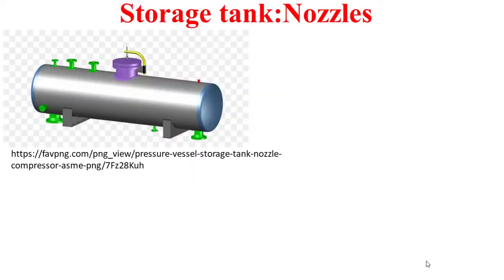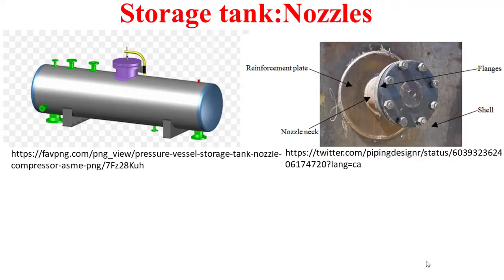As you can see in this figure, the components in green are the nozzles and the component in purple is the manhole. The manhole is also considered a nozzle. A nozzle can be simply seen as an opening, which is carried out on the shell or on the formed head.